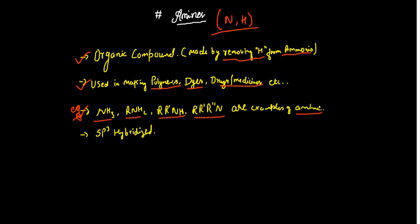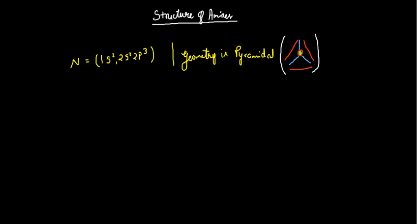Amines are sp3 hybridized. Now we can learn the next level. As we're talking about ammonia and amine, the structure of amine consists of nitrogen as a key component.